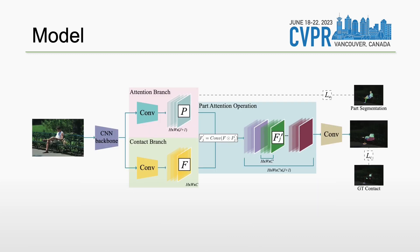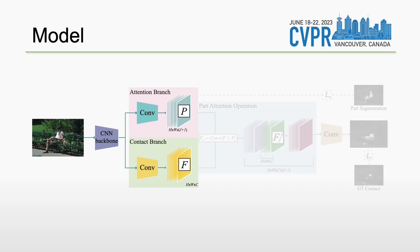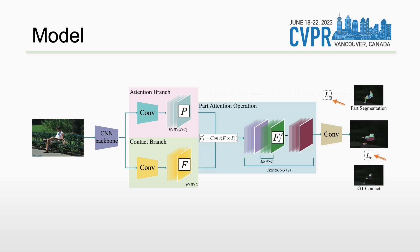Based on the HOT dataset, we further design a new contact detector. Our model takes the insight that humans use global image context and also focus on regions around body parts to examine if there is contact. Given an image, we use a CNN backbone to extract image features, then a decoder with two branches: an attention branch for inferring attention masks for body parts, and a contact branch for extracting contact features. We use the attention masks to extract part-related features and make contact estimates. During training, we supervise the attention branch with human part segmentations and the contact estimation with our contact annotations.